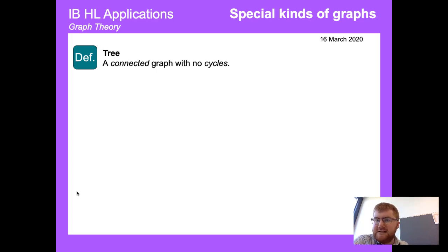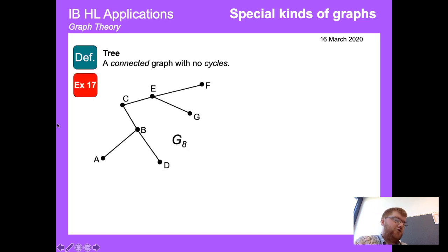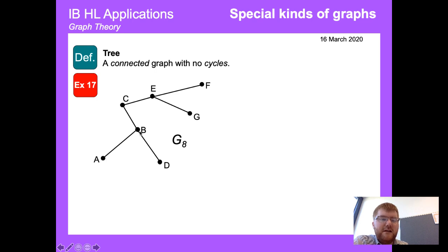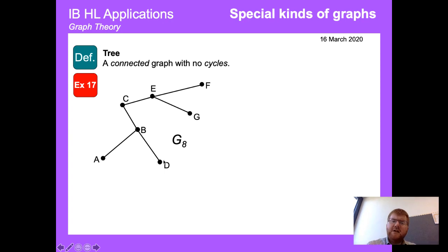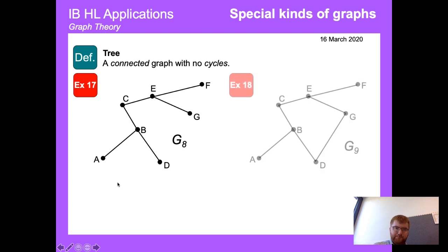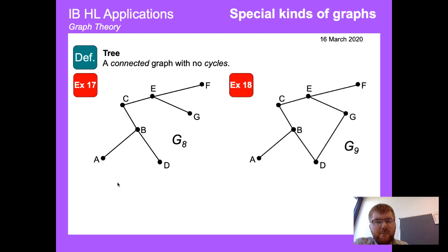On to more definitions. A tree is a connected graph with no cycles. For example, to get from D to F you go through B, C, and E; to get from A to G you go through B, C, E, and G — it's definitely connected. But there's no cycle, so you can't loop back to your starting point. You'd have to retrace your steps.